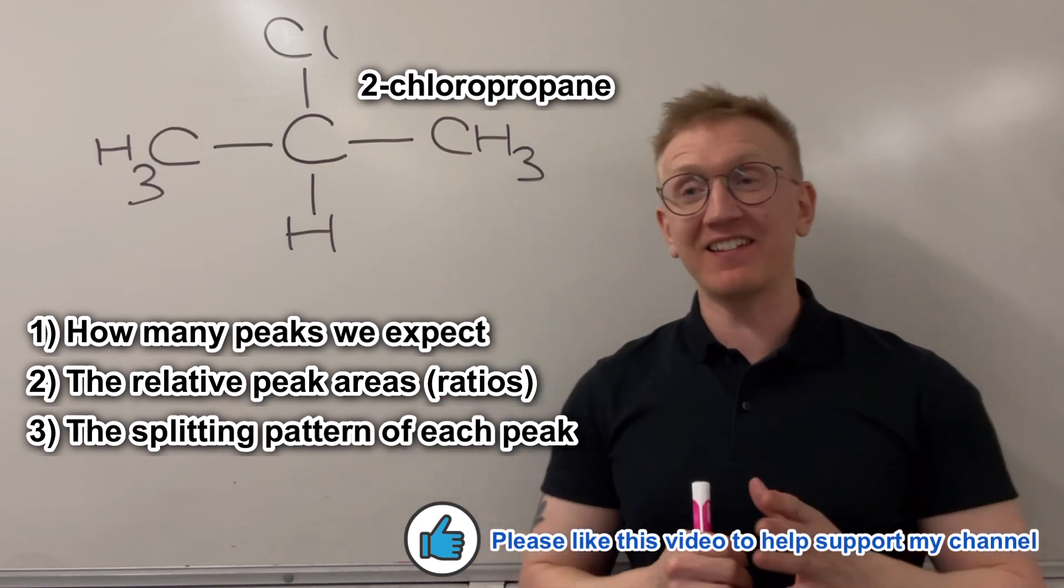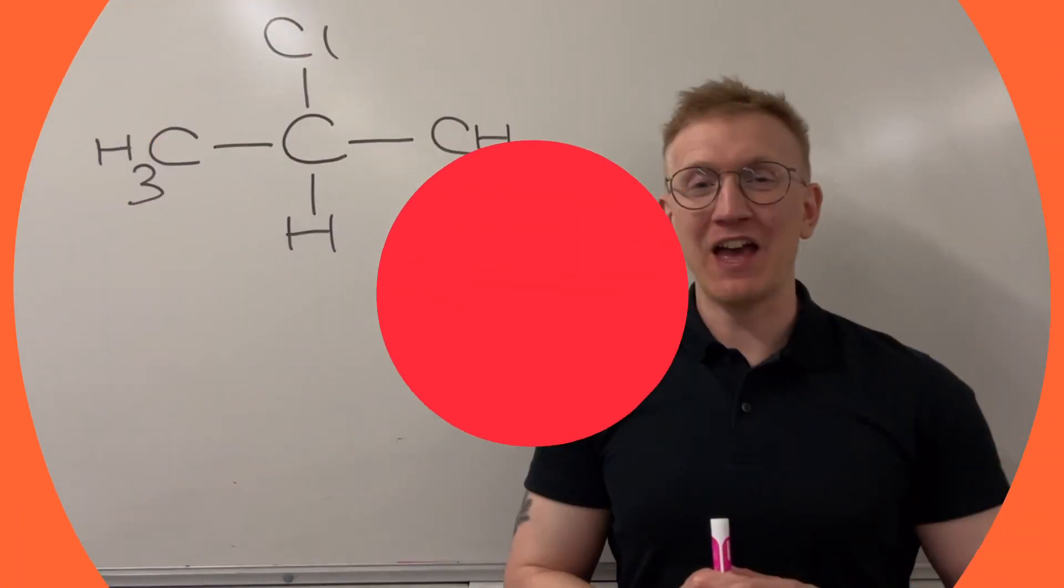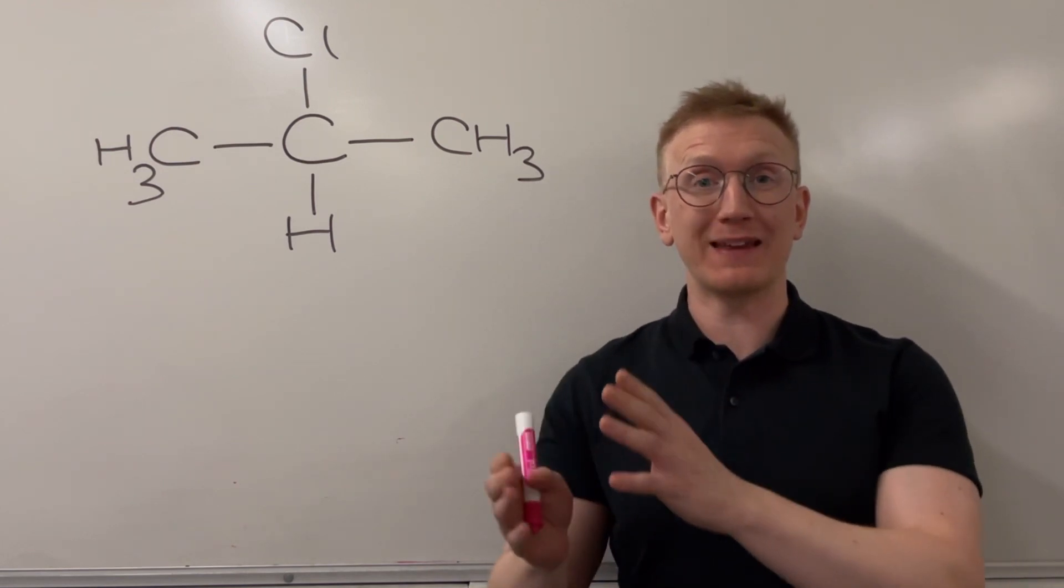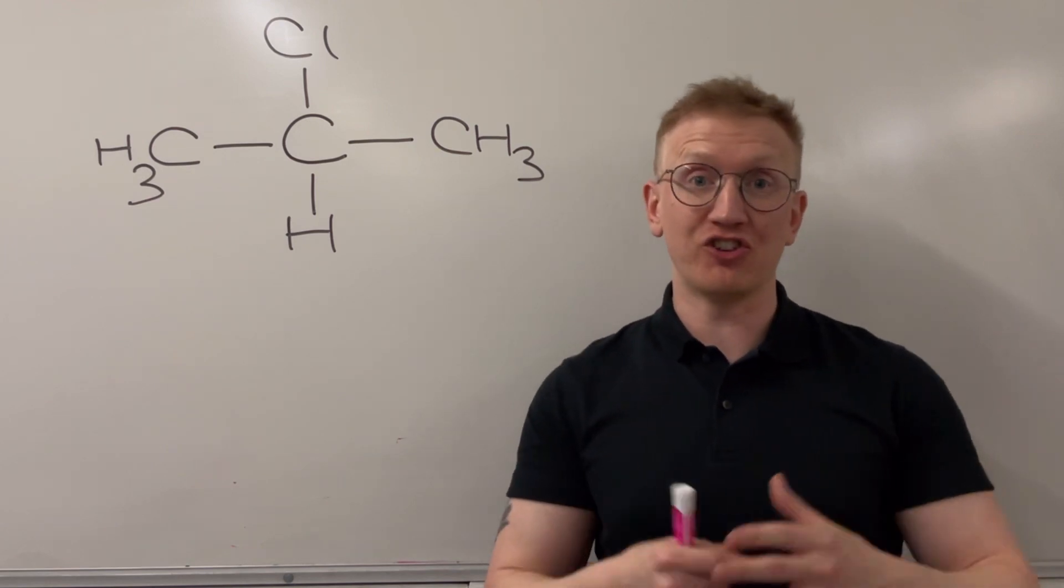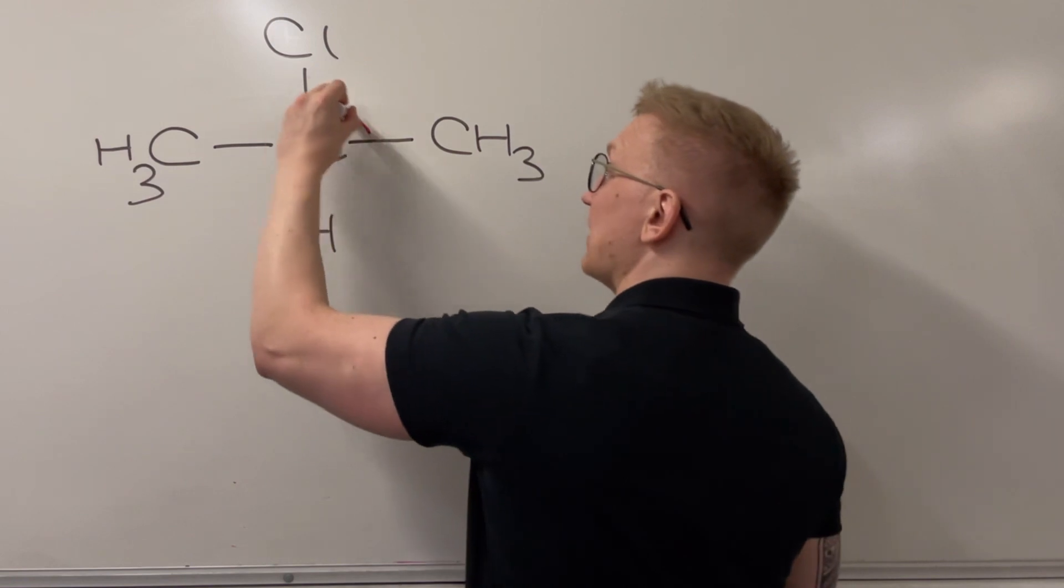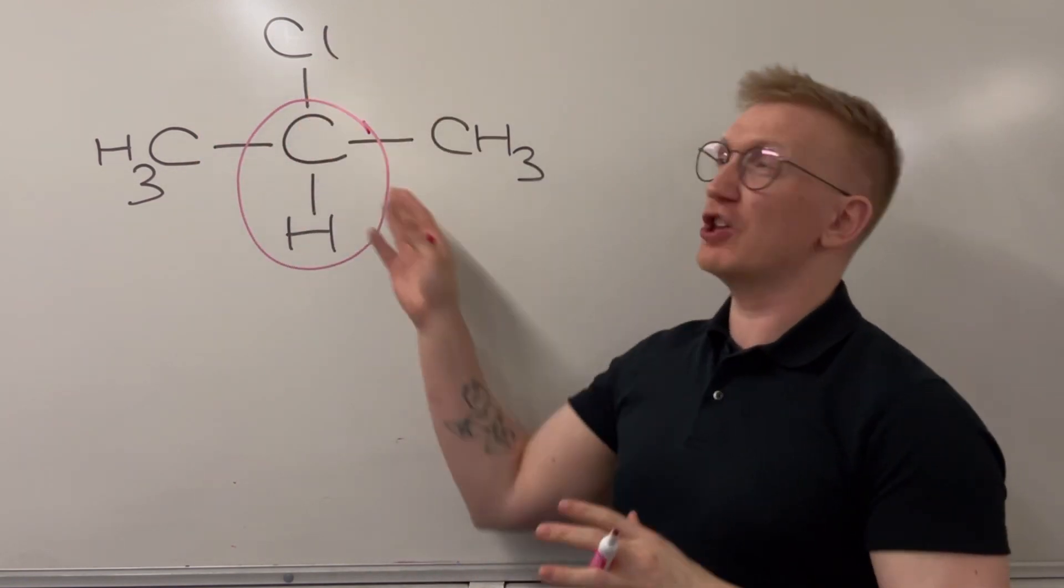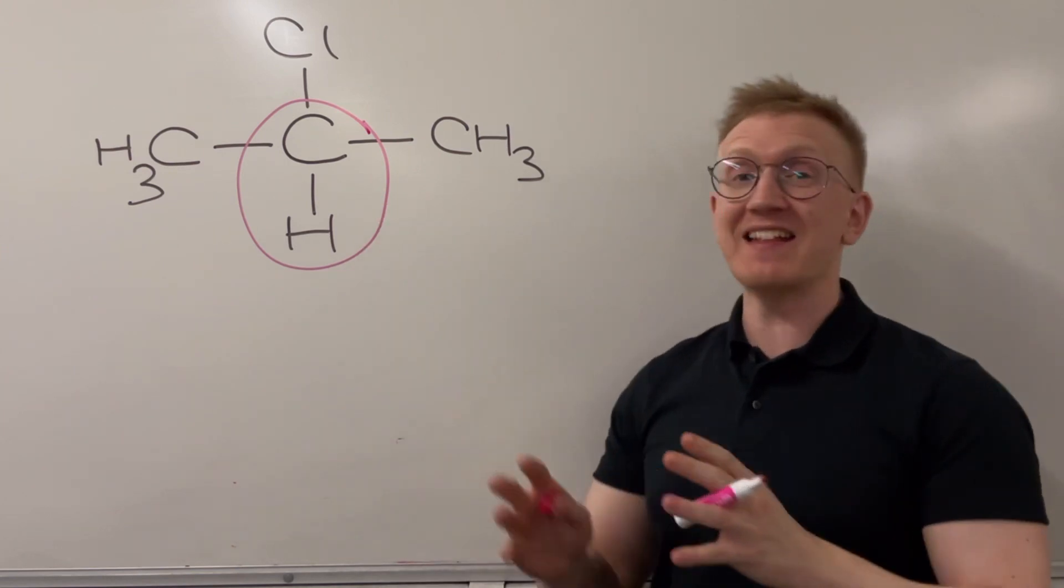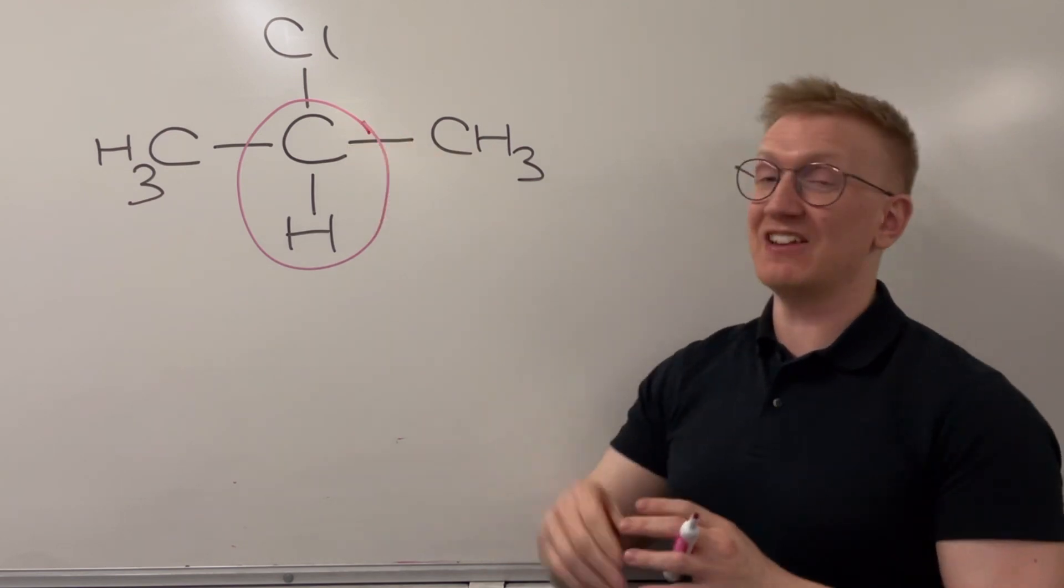So let's take a look at this example for 2-chloropropane. We first need to identify how many peaks we expect to have, which is going to be the same as figuring out how many different hydrogen environments I have. The first hydrogen environment I can see is really obvious, it's this one just here, the CH. I've identified a non-equivalent hydrogen environment, and it's the CH just here.